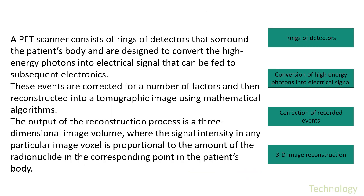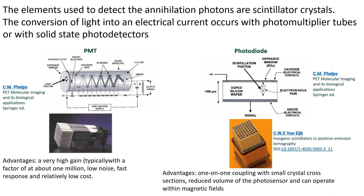A PET scanner consists of rings of detectors that surround the patient body and are designed to convert the high-energy photons into electrical signals that are fed to subsequent electronics. These events are corrected for a number of factors and then reconstructed into a tomographic image using mathematical algorithms. The output of the reconstruction process is a three-dimensional image volume where the signal intensity in any particular voxel is proportional to the amount of the radionuclide in the corresponding point of the patient body. The elements used to detect the annihilation photons are scintillator crystals, whose properties will be described later in this presentation.